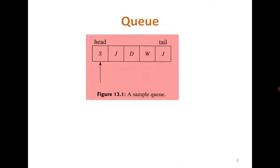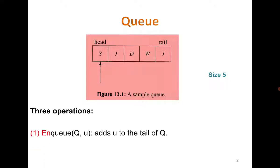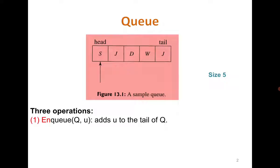Let me introduce the concept of a queue. This represents a queue where S is the head and J is the tail. Its size is 5 because there are 5 boxes. It has three operations. First, if you want to add something to the queue.